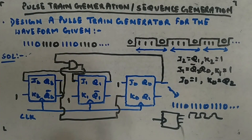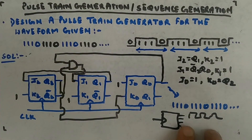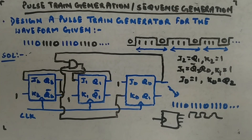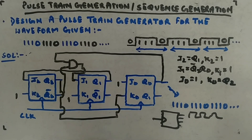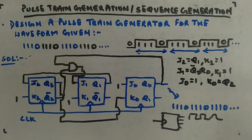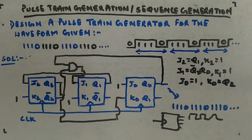The process to follow every time is: determine the required sequence, calculate the number of flip-flops using 2^(n−1) ≥ bits, assign unique states, write the excitation table, derive K-maps, and finally draw the circuit. The second method will add different elements. Let's look at another example now.